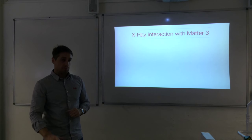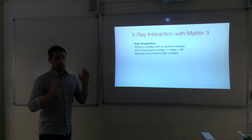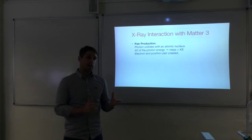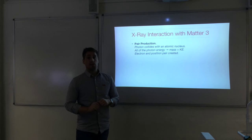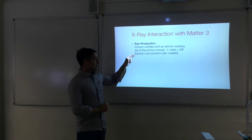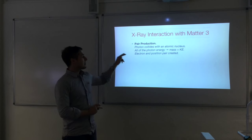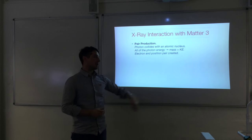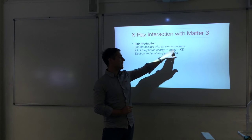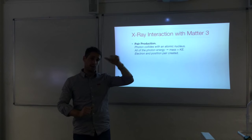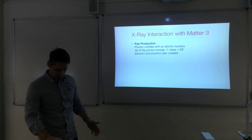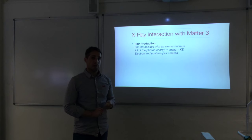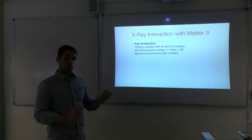The third interaction process is pair production. In the first two cases the photon was interacting with atomic electrons, but here it's interacting with the nucleus. The photon strikes the nucleus and the photon energy is converted into mass and kinetic energy. Because energy is converted into mass, Einstein's mass-energy equivalence comes into play. The mass is in the form of an electron and positron pair — that's why it's called pair production, because energy is always converted into matter and antimatter.